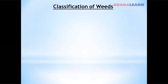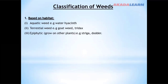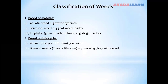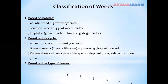Classification of weeds: Weeds can be classified based on their habitat, including aquatic weeds, terrestrial weeds, and epiphytic weeds — weeds that grow on other plants. Weeds can also be classified based on their life cycle into annual weeds and biennial weeds. Weeds can further be classified based on the type of leaves into broad-leaved grasses and narrow-leaved grasses.